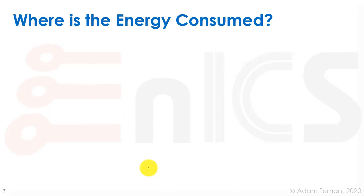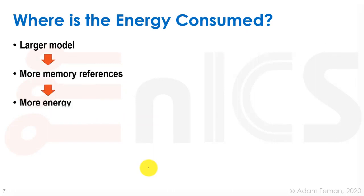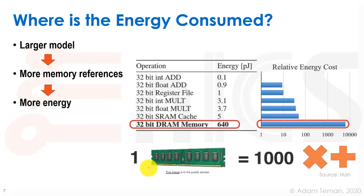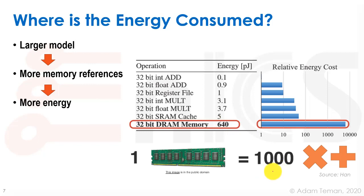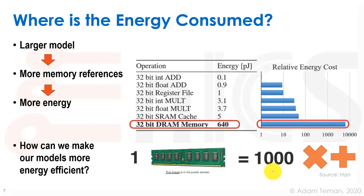Where is the energy consumed? A larger model means more memory references, which takes up more energy. Well-known statistics show that different operations — from a 32-bit integer add down to a 32-bit floating point multiplication — vary in energy cost, but nothing compares to an access to DRAM, which is several orders of magnitude larger in cost. So how are we going to make our models more energy efficient? We'll discuss that among the other challenges in this lecture.